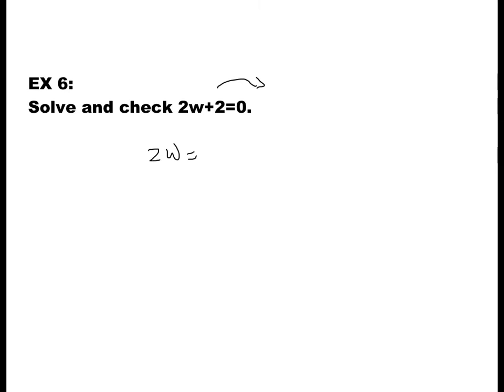To solve this one, keep the variable on the left and numbers on the right. We don't move 2w. We move 2 to the right — it becomes negative 2. So we get 2w equals negative 2. To get rid of the coefficient 2, divide both sides by 2. The 2s cancel and w equals negative 2 over 2, which is negative 1.